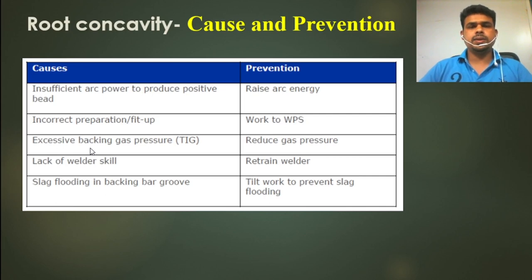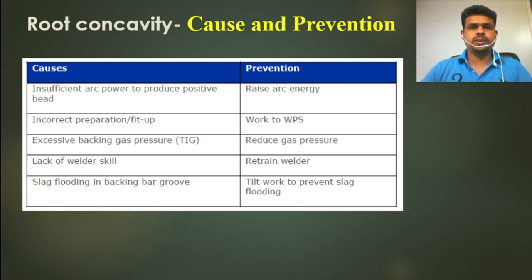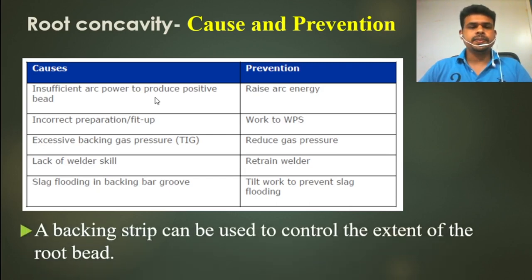The cause of root concavity relates to not following proper WPS. If we follow proper WPS and our welder is skilled, we should not get this type of problem. We need to train our welder to follow the proper WPS. Additionally, a backing strip can be used to control the extent of the root bead.